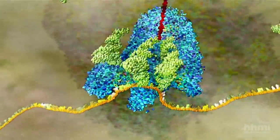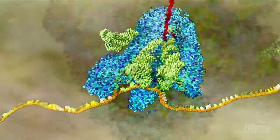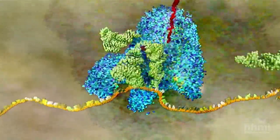The larger subunit of the ribosome removes each amino acid and joins it onto the growing protein chain.